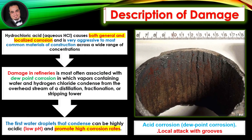Description of damage. Hydrochloric acid, aqueous HCl, causes both general and localized corrosion and is very aggressive to most common materials of construction across a wide range of concentrations. Damage in refineries is most often associated with dew point corrosion, in which vapors containing water and hydrogen chloride condense from the overhead stream of a distillation, fractionation, or stripping tower.